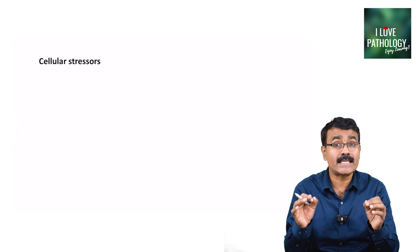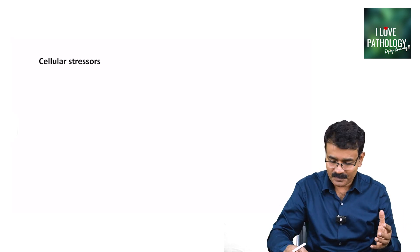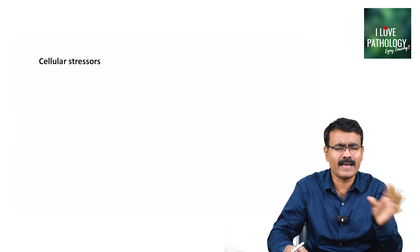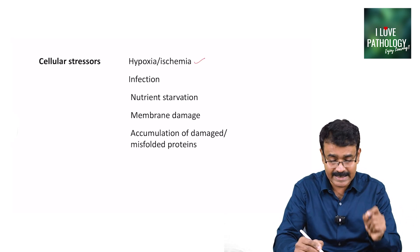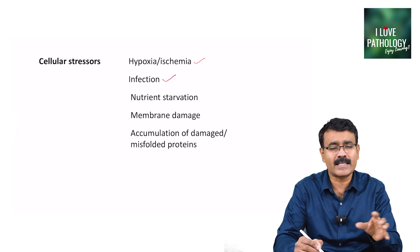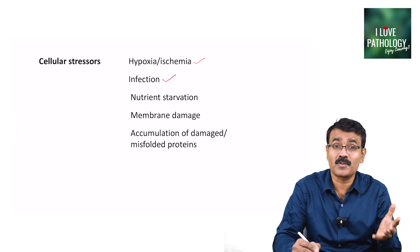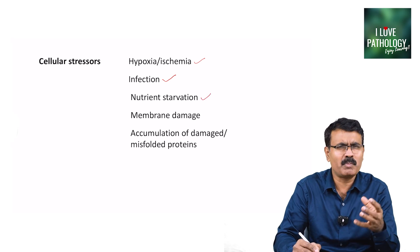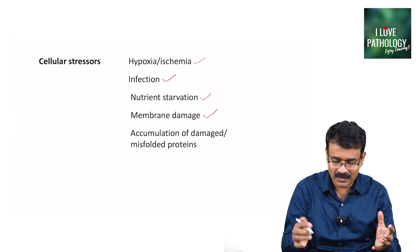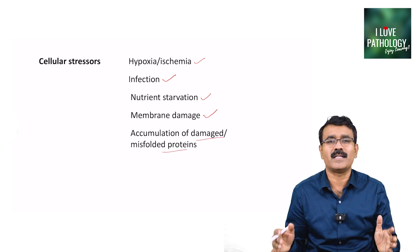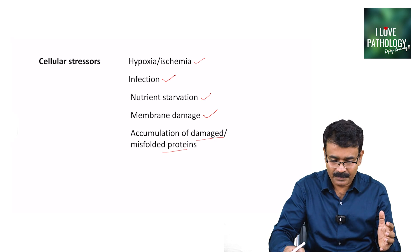Let us learn what the stressors are — what causes stress to a particular cell. The stressors could be a number of things: as simple as hypoxia or ischemia, infections of all kinds, nutrient starvation, membrane damage, or accumulation of damaged or misfolded proteins. All of these are stressors to the given cell.